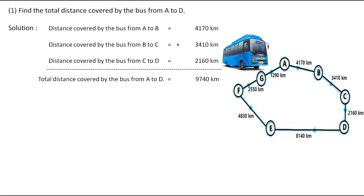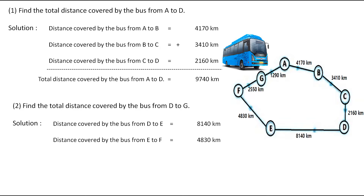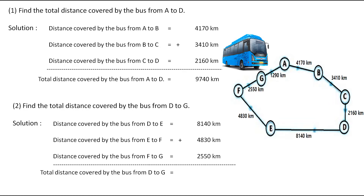The next question is: find the total distance covered by the bus from D to G. The bus starts journey from D and reaches G, passing through E and then F. So we have to add up these three distances. D to E is 8140 km, E to F is 4830 km, and F to G is 2550 km. So the total distance covered by the bus from D to G is 15,520 km.